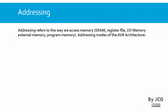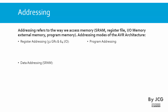Now let's talk about the addressing of our microcontroller. Addressing refers to the way we access different types of memories and even different sections of the memory. For example, in the RAM we have the internal RAM but we also have the register file and the input/output memory. Think of them as different neighborhoods — some have special houses and some are just regular houses. We can also access external memory and program memory. The addressing modes in the AVR architecture are basically three: register addressing, data addressing, and program addressing. Register addressing refers to the 32 general-purpose registers and the 64 I/O registers. Data addressing refers to all the RAM, either internal or external. Program addressing refers to when we want to access the flash.